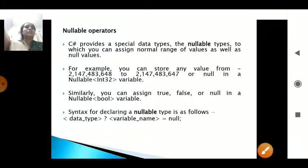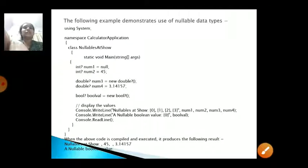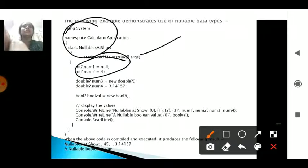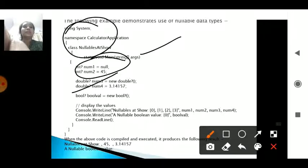Here is an example of nullable operators. Starting with the main program, you have int? — the question mark means this is a nullable type. The variables num1 and num2 are nullable: num1 has null and num2 has 45. Additionally, num3 and num4 are of type double? — a nullable double type — where num4 is assigned 3.14157.